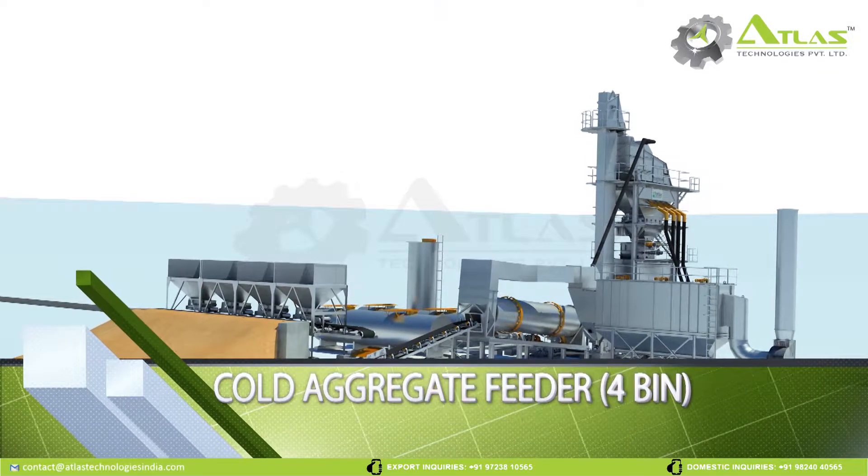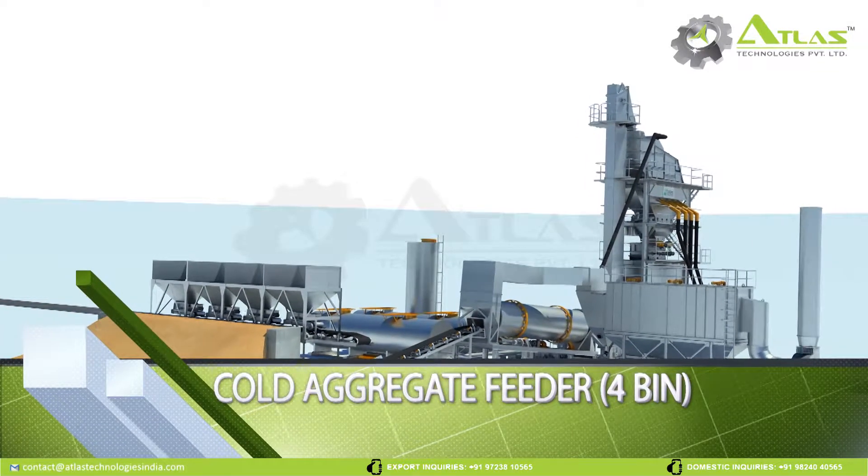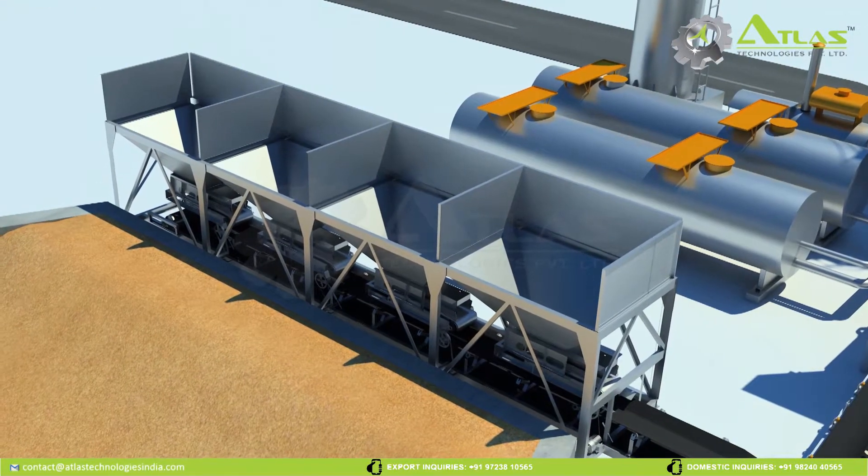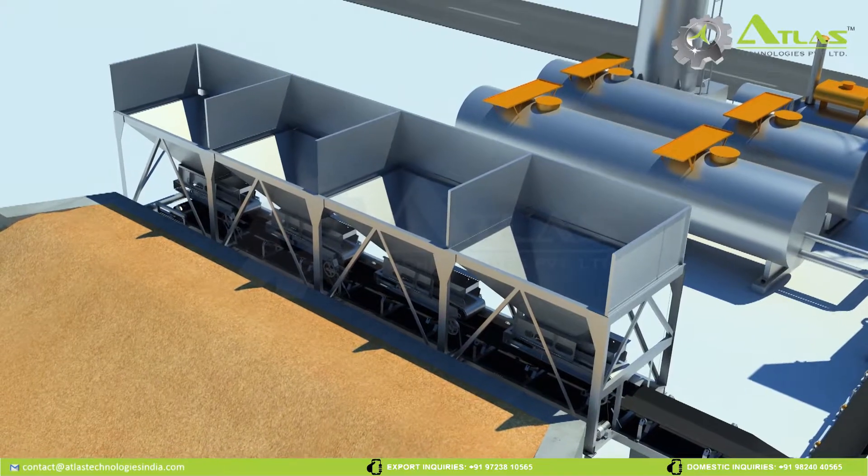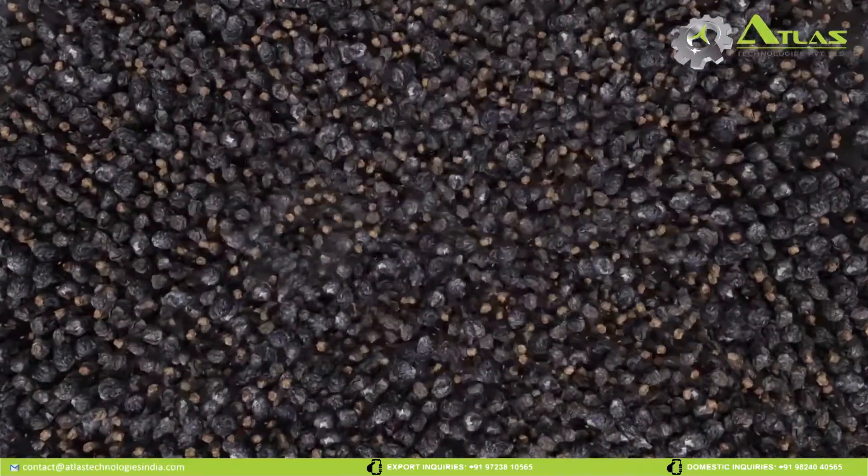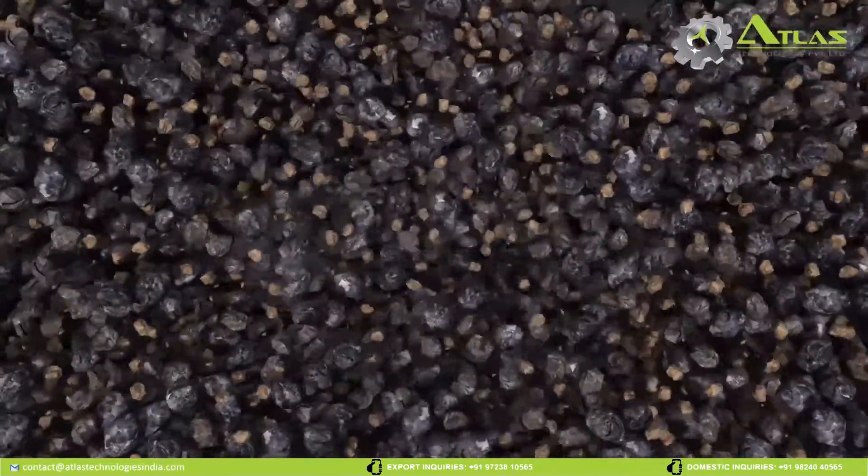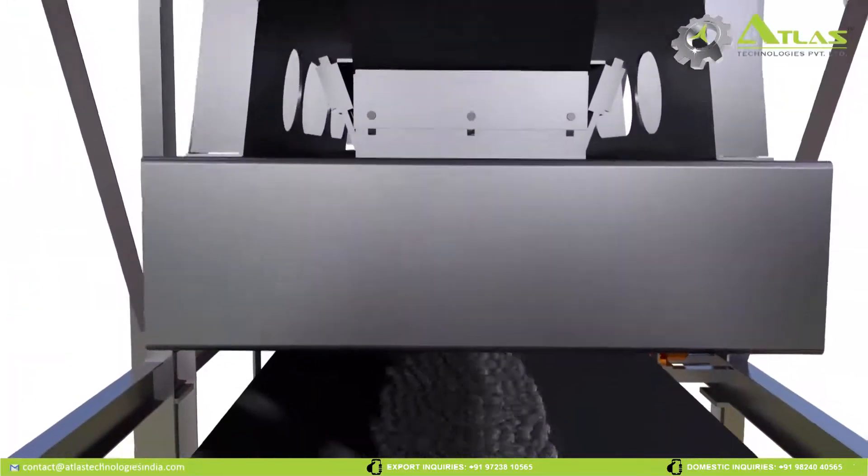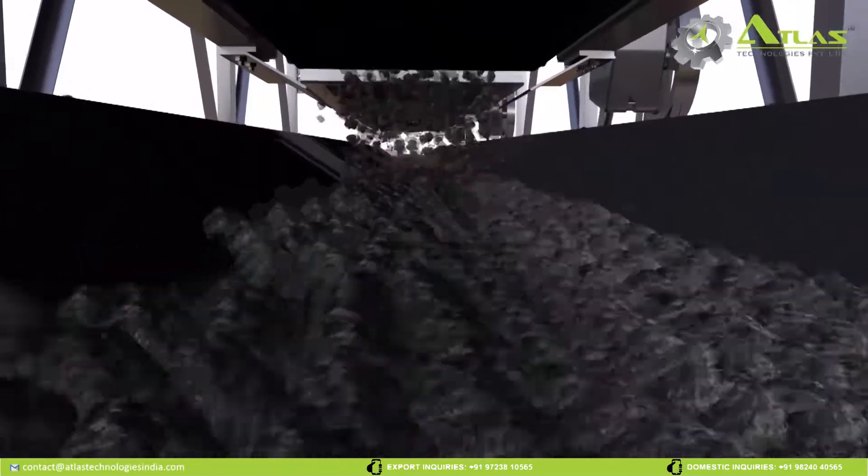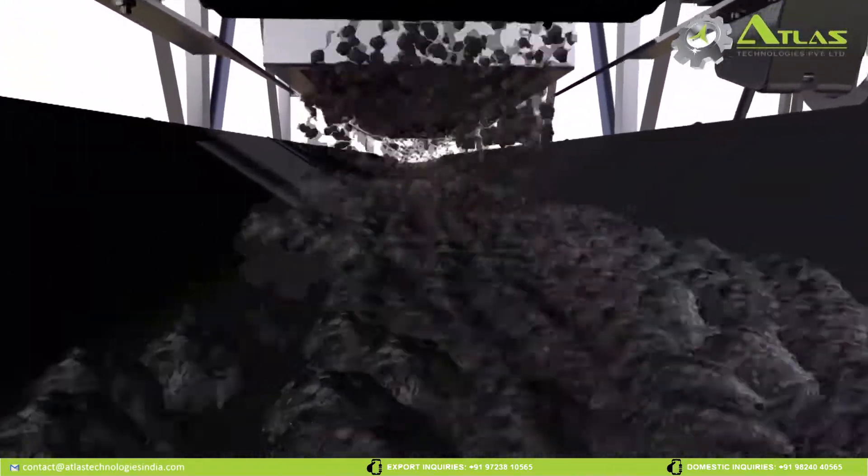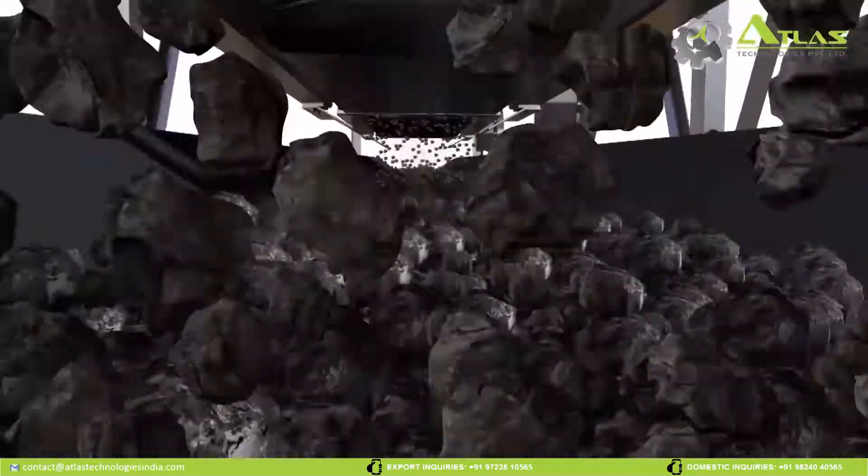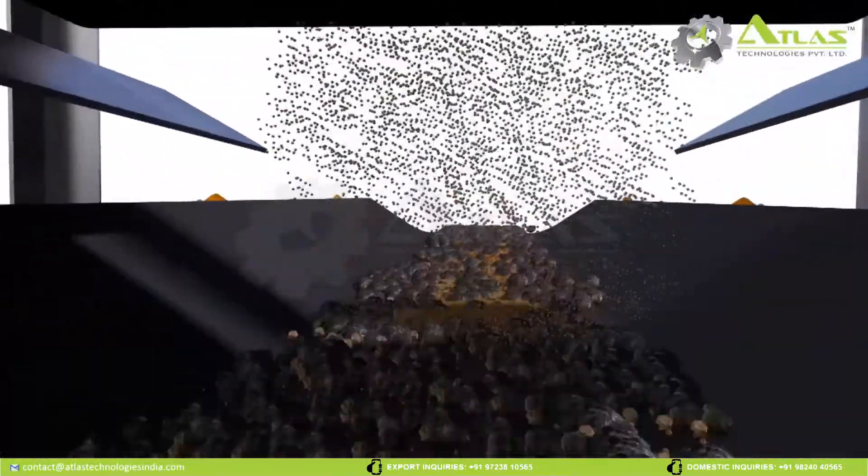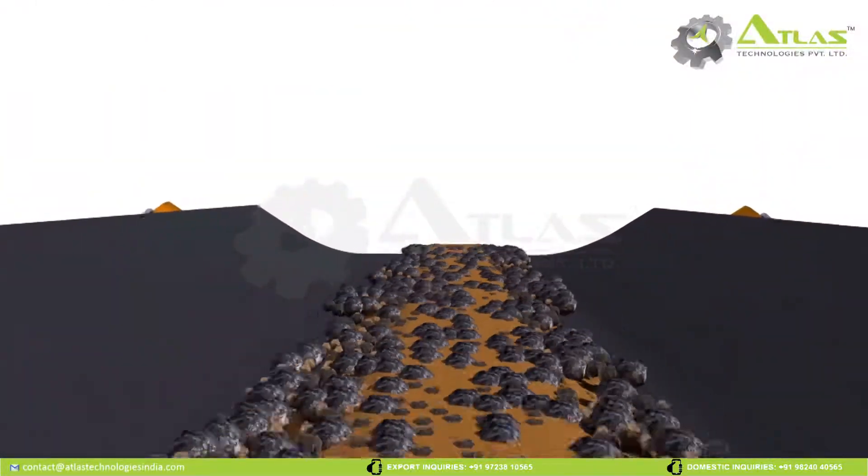Cold Aggregate Feeder. The material is poured into the cold aggregate feeder system comprising of four bins. The feeder belt conveyor is mounted under each bin. This gathering belt conveyor transports the aggregate to the vibro feeder system.